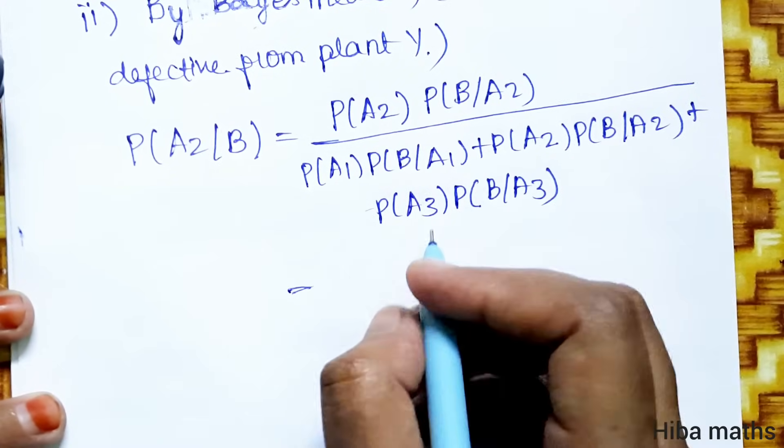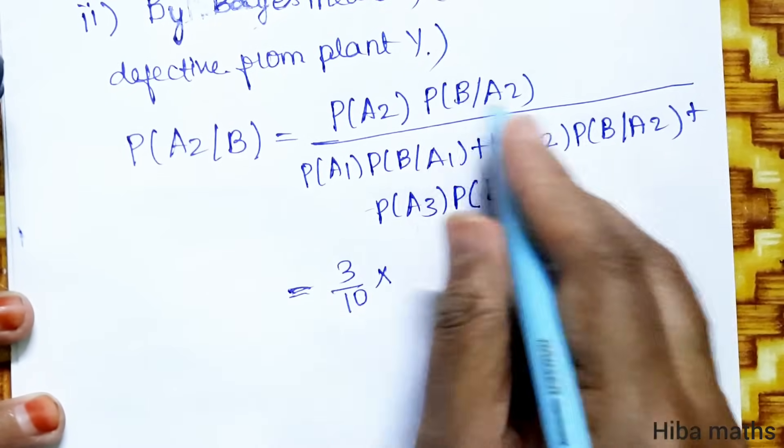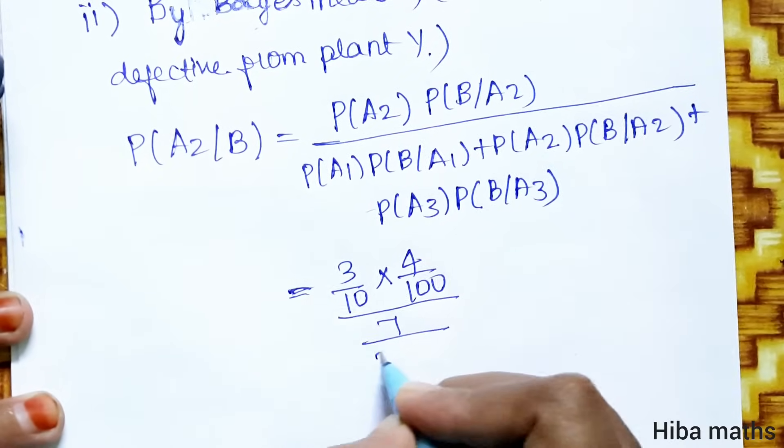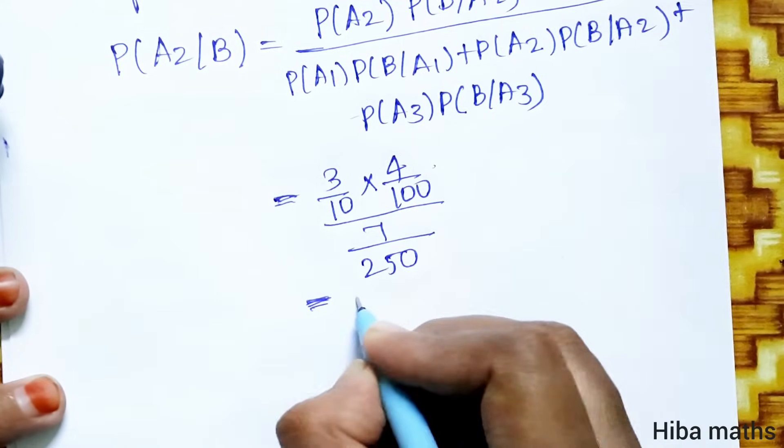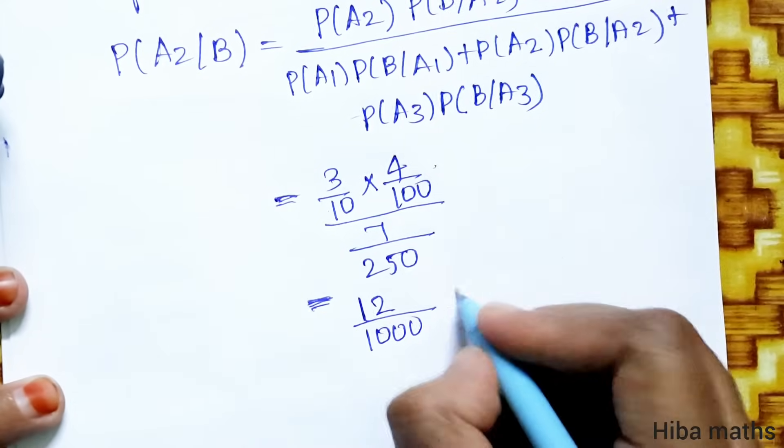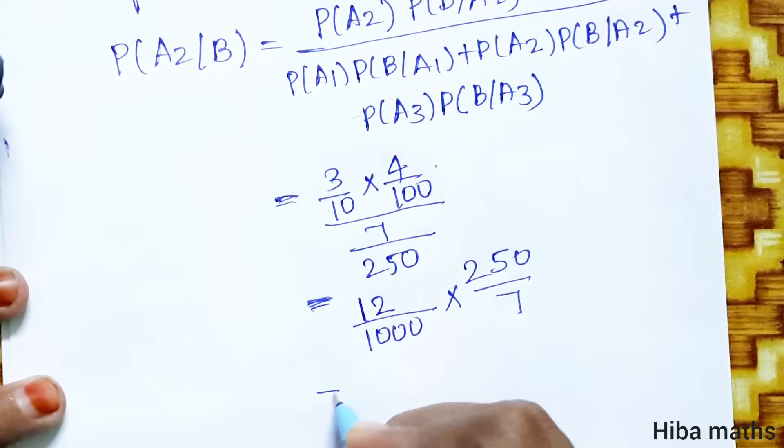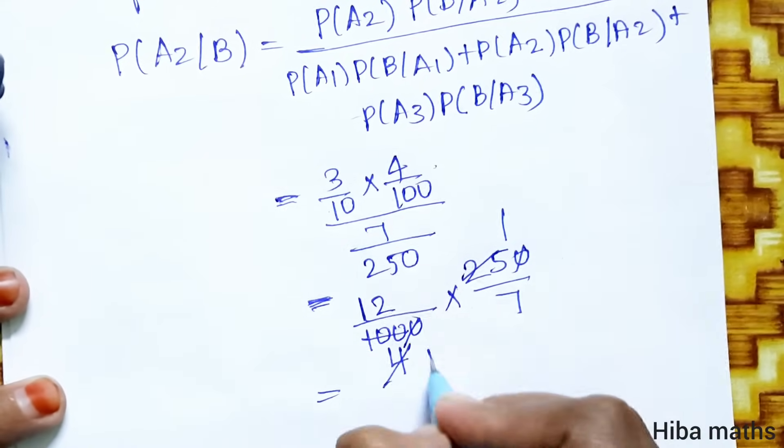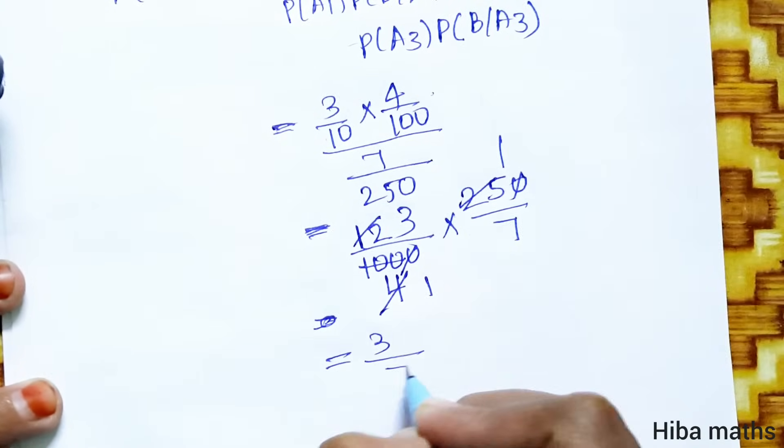P of A2, 3 by 10 into B by A2, 4 by 100 divided by 7 by 250. Next line, 3 times 4 is 12 by 1000. 1, 2, 3 into it up to 250 by 7. 0, 0 cancel 25, 1, 25, 4, 100, 4, 1, 4, 3. So final answer, 3 by 7.